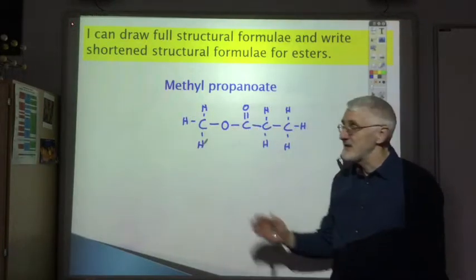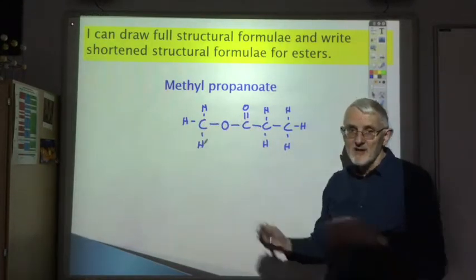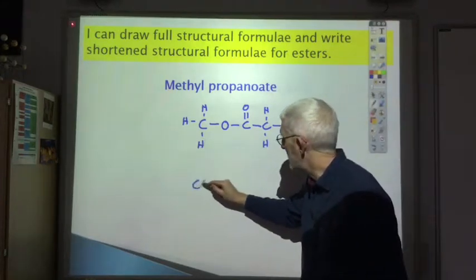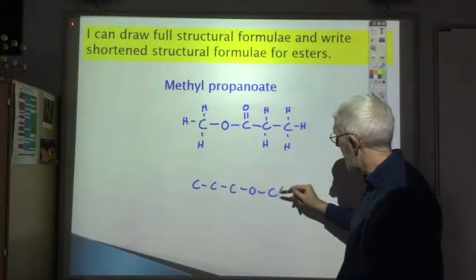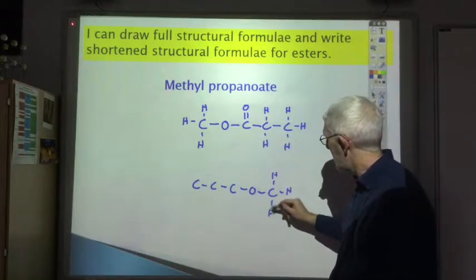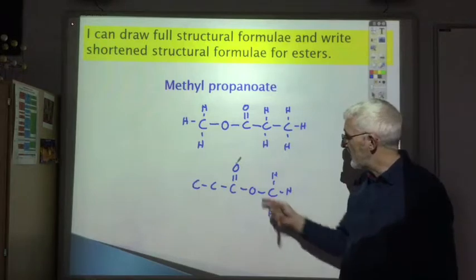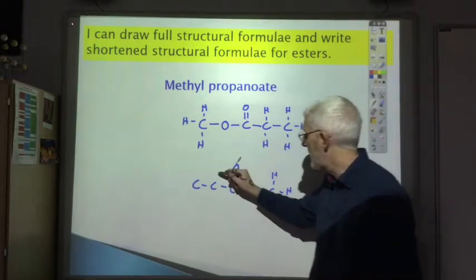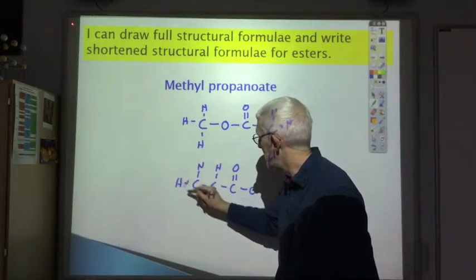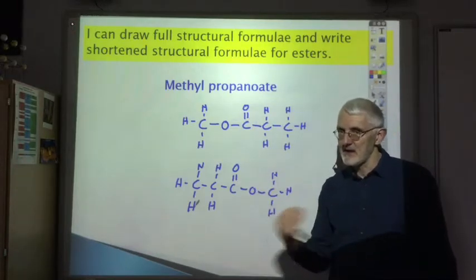You can't just assume the C=O is always on the right — you could equally draw this ester the other way around. The C=O is always on the carboxylic acid side of the oxygen, which could be on the left depending on how you draw it. You always have to work out which side is the acid side; you can't say it's always on the right or always on the left.